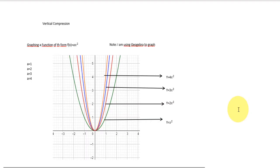An example of vertical compression is when we have f(x) = ax². Remember, a could be any number. Let's start with a = 1, 2, 3, and 4. Remember, a = 1 gives us x², which is our parent function. What happens if we increase the number to 2, 3, or 4?